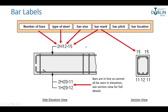Bar labels are very important. Each bar in a drawing is identified by the following standard labelling sequence: number of bars, type of steel, bar size, and bar mark — and if required, for a slab, the bar pitch and bar location. When you look at a structural engineering detail drawing, you'll always see little arrows coming up from the rebar with a notation containing a number, a letter, a number, and a dash.